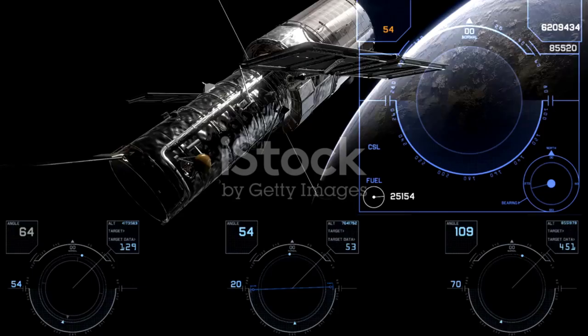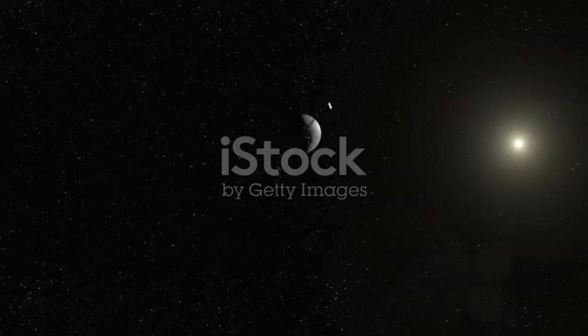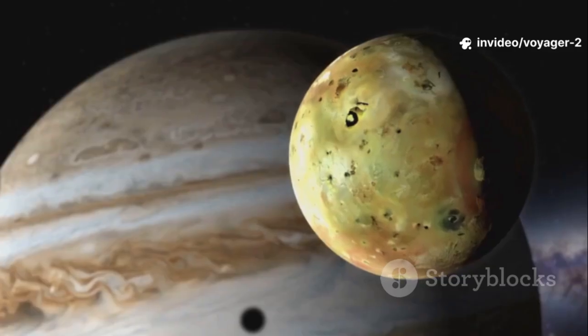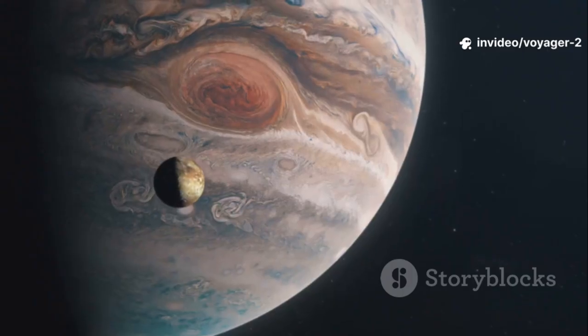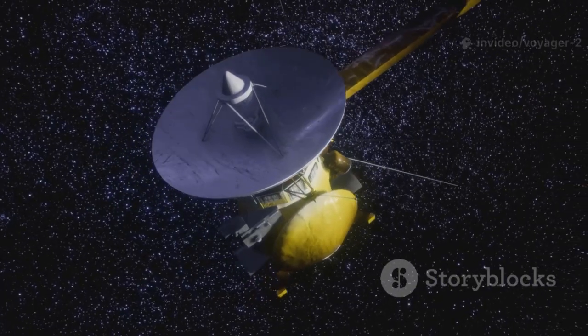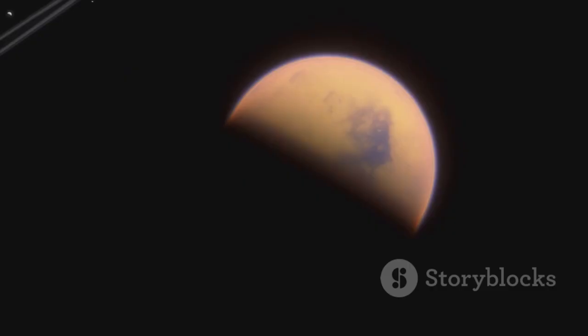Voyager 2's journey was a master class in celestial mechanics. It reached Jupiter in 1979 revealing the great red spot and active volcanoes on Io, worlds of violence and beauty. Using Jupiter's gravity, it slingshotted to Saturn, flying past the rings and glimpsing Titan's thick mysterious atmosphere.